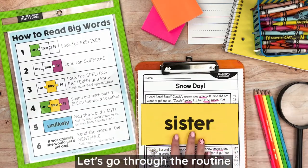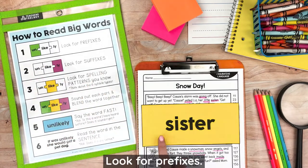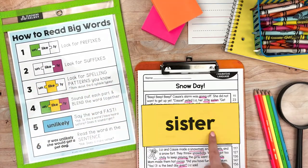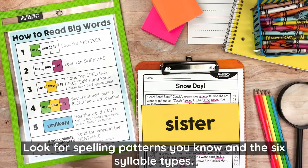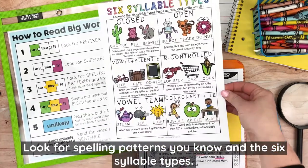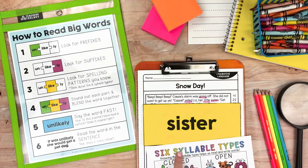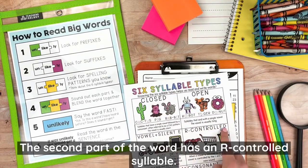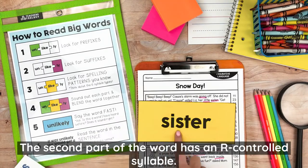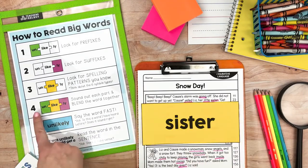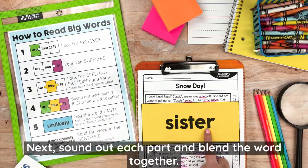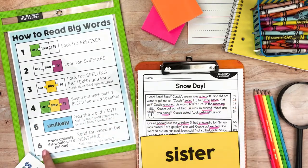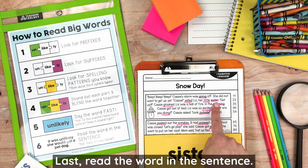Let's go through the routine one more time with this word. Look for prefixes, look for suffixes, look for spelling patterns you know, and the six syllable types. The first part of the word has a closed syllable. The second part of the word has an R-controlled syllable. Next, sound out each part and blend the word together. Then say the word fast. Last, read the word in the sentence.